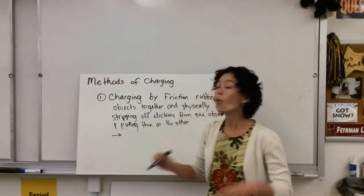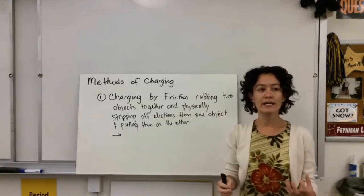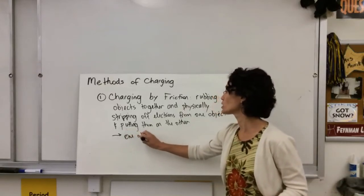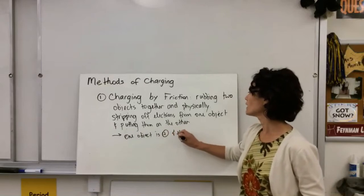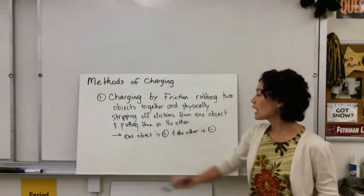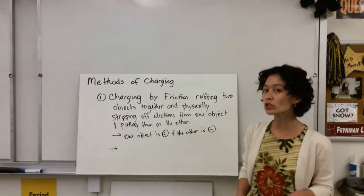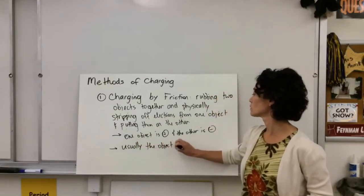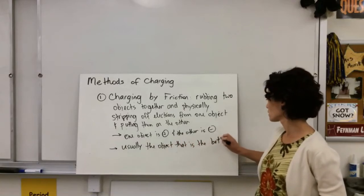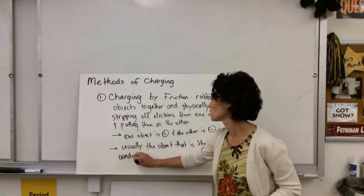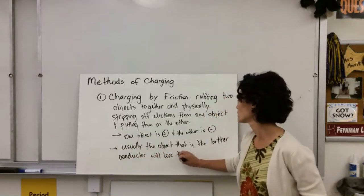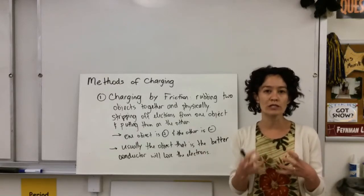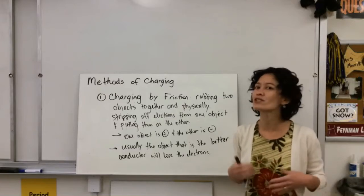As a result, one object becomes positively charged because it is losing electrons, and the object that's gaining electrons is going to become negatively charged. So you're left with one object positive and the other negative. Usually the object that is the better conductor will lose the electrons, because something that is an insulator holds onto its electrons really tightly.